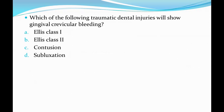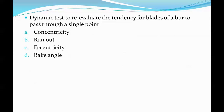Next question: which of the following traumatic dental injuries will show gingival travicular bleeding? Options are: Class 1 luxation, Class 2 luxation, contusion, and subluxation. The correct answer is Option D, subluxation.